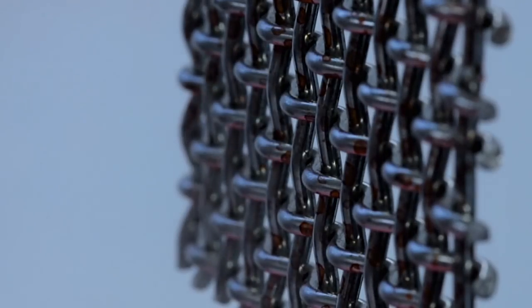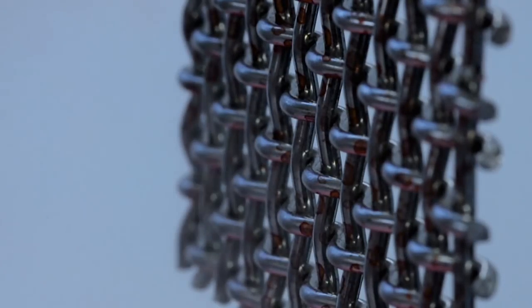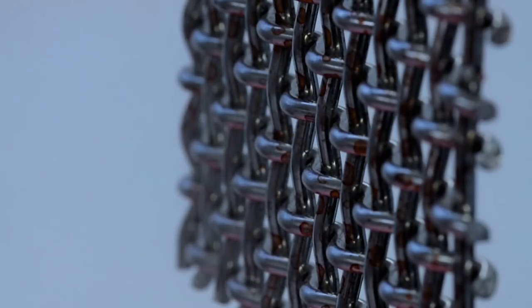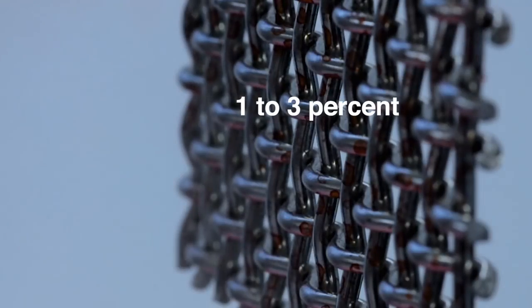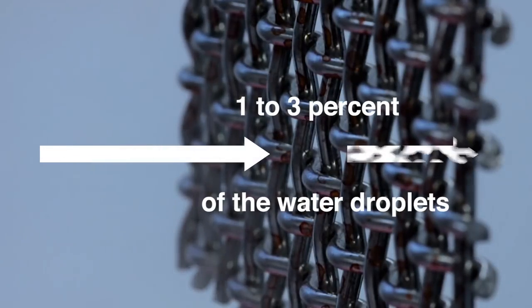The motivation to develop this new system stems directly from the inefficiencies of current natural fog harvesting systems. Existing systems, which generally consist of a plastic or wire mesh hung vertically in the path of fog banks, only capture about 1-3% of the water droplets that pass through them.